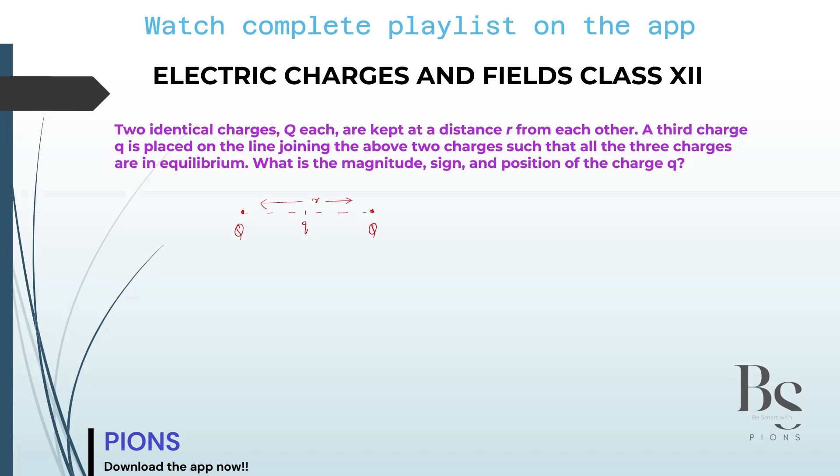Let's read one more time. Two identical charges Q each are kept at a distance R from each other, the first two charges. A third charge q is placed on the line joining the above two charges such that all three charges are in equilibrium. What is the magnitude, sign and position of the charge?